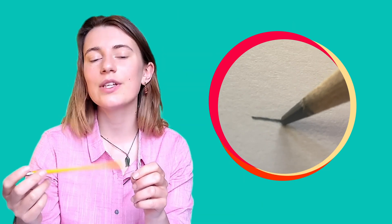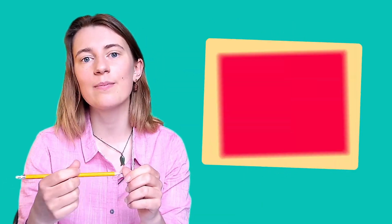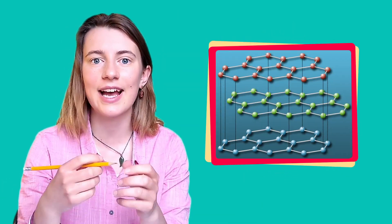So what makes our graphite break off our pencil when we write? Every time we use our pencils we are putting millions of layers of graphite down onto our paper. But what would happen if we could make one single layer slide off onto our paper?